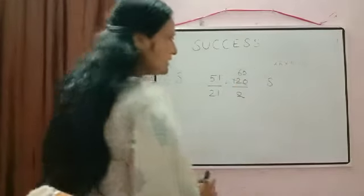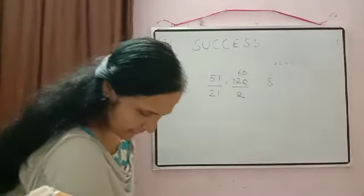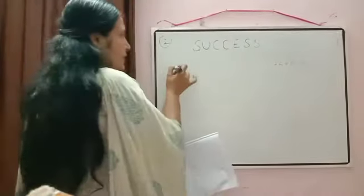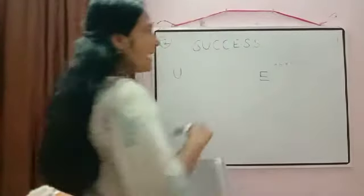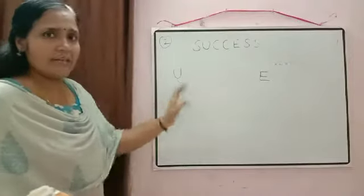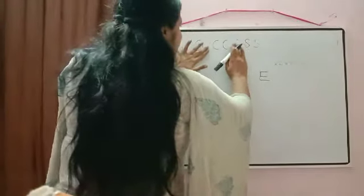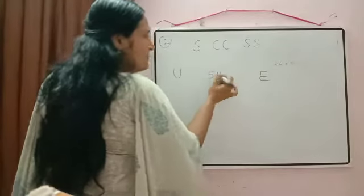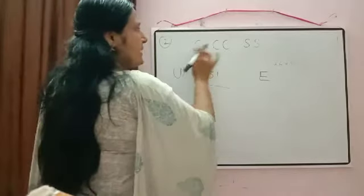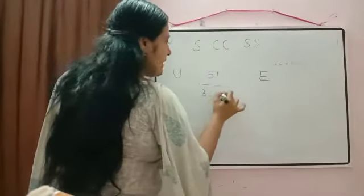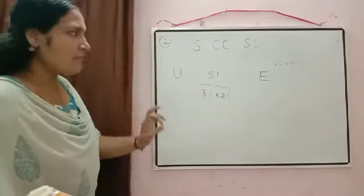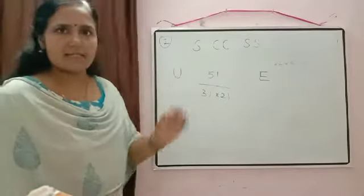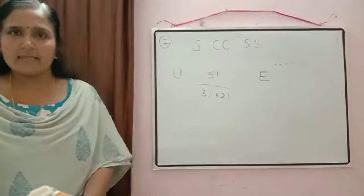Further conditions on SUCCESS: word begins with S and ends with S — fix two S's; remaining 5 letters arranged in 5!/2! = 60 ways. Word begins with U and ends with E — fix U and E; remaining 5 letters (S,S,S,C,C) arranged in 5!/(3!×2!) ways. Students should complete calculations.